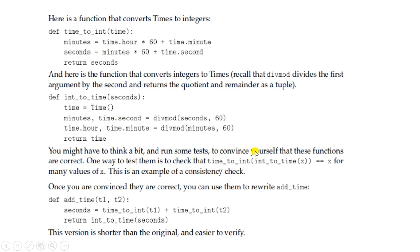Once you have convinced yourself these functions are correct, you can use them to rewrite add_time. If the results match, then in the new add_time(t1, t2): seconds = time_to_int(t1) + time_to_int(t2), and return int_to_time(seconds). This is the modified and improved version of the add_time function using integer conversion.